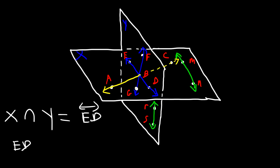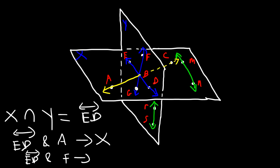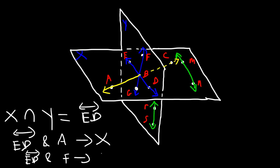Line ED and point A determine what plane? ED and point A are both found in plane X, so they determine plane X. Remember, a line and a point determine only one plane. What about line ED and point F? F and ED are found in plane Y, so that line and point determines plane Y.